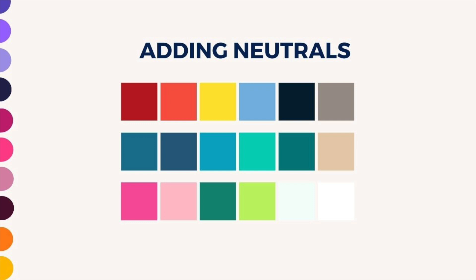Sometimes you need something a little more in your colour palette, or sometimes a palette is too bright or too vibrant and you need to tone it down a little bit. A great way to do this is to add neutrals into your palette. Here I've taken some of the palettes created before and added some neutrals. For the first one, I've added a warm grey, which helps bring down the boldness of the colours. Sometimes it can be a bit too much if your whole page is bright colours, and the same applies for the other two palettes.